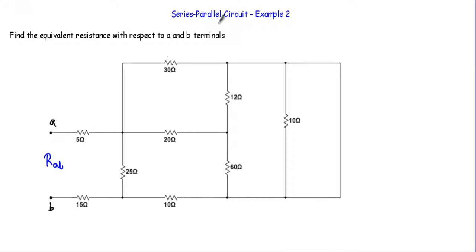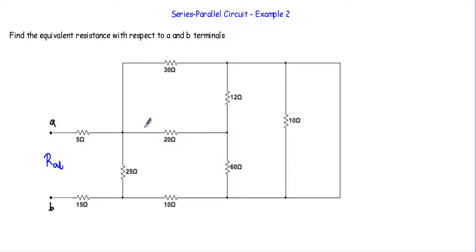This is my second example of a series-parallel circuit. I have to find the equivalent resistance with respect to terminals A and B. This circuit contains a total of 9 resistors. I will minimize all these nine resistors into a single resistor, and that resistance will be known as RAB.